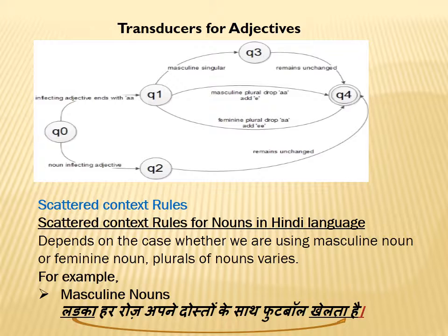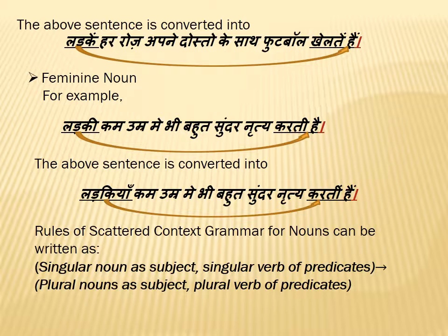Scattered context rules for nouns. For example, masculine noun: 'Ladka her rose apne dosto ke saath futbol khehlta hai.' If this is converted to its plural form, then it would be 'ladke her rose apne dosto ke saath futbol khehlta hai.'